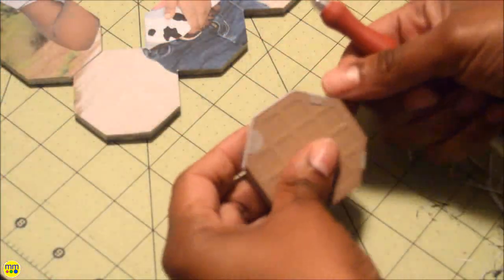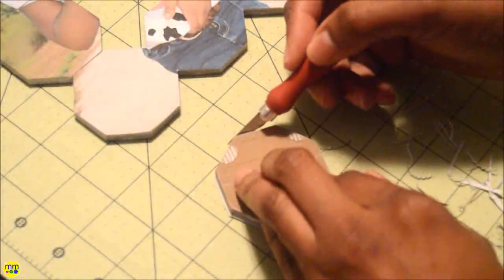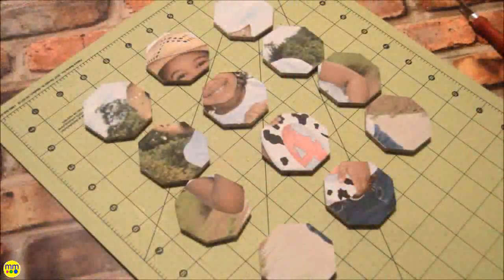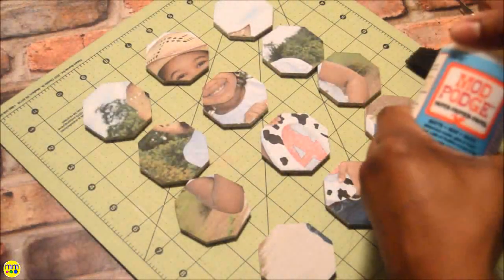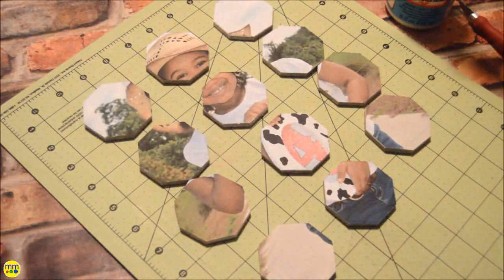I used an X-Acto knife to trim off the excess paper. Once dry, apply a topcoat of Mod Podge for extra protection and you're done.